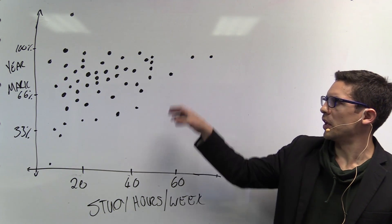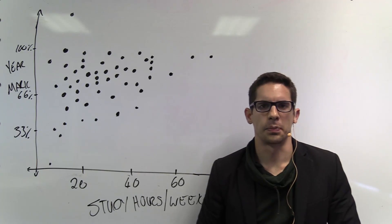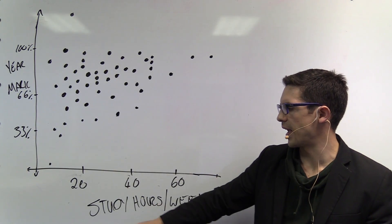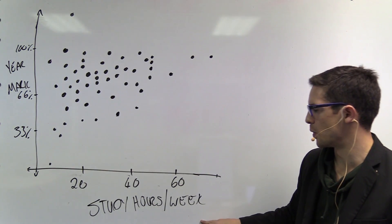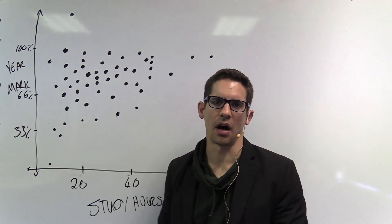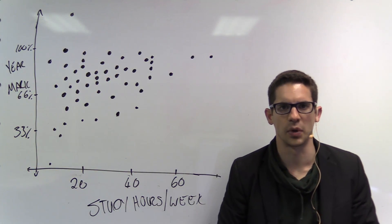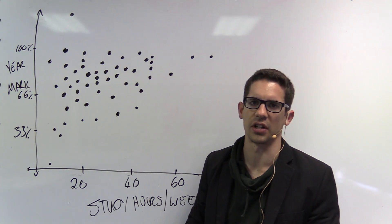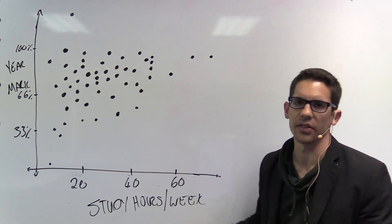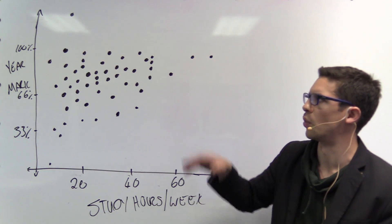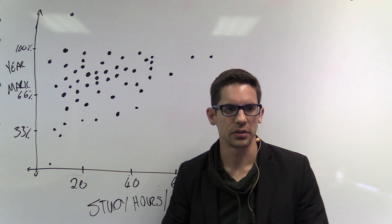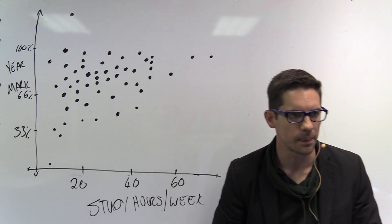I've redrawn the textbook example, so it's a little bit different. On our x-axis we still have study hours per week, but on the y-axis I've used the final year mark — how much did we get the previous year and how many hours per week did we study in that year? The data looks more or less the same; I'm just making it a little bit more relevant and getting away from the GPA score.